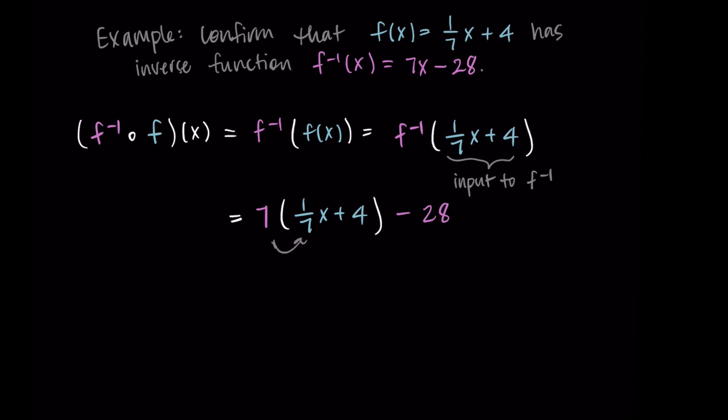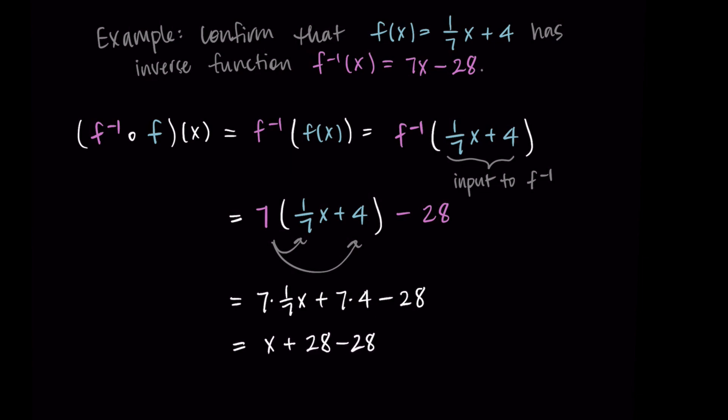I want to simplify this to make sure I get x as my solution. So I'll distribute that 7 on the outside: 7 times one-seventh x plus 7 times 4, minus 28. So 7 times one-seventh is x, then we have plus 28 minus 28. Those 28s cancel and I'm just left with x. So we composed f inverse with f, did this algebra, and just got x as our answer. This is half of our work to confirm that these functions are in fact inverses.